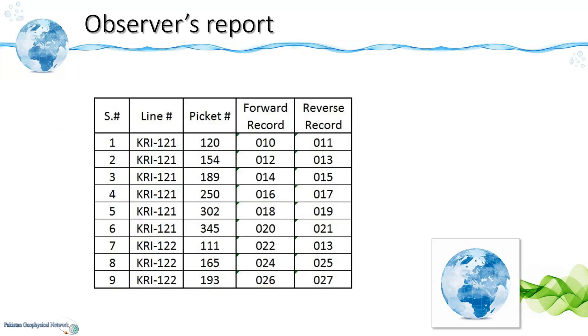So this is a typical observer's report. Here the second column has the line name then the picket numbers and then the forward and reverse record numbers.